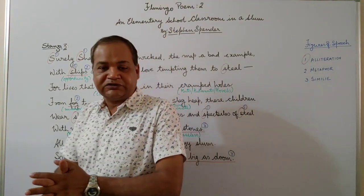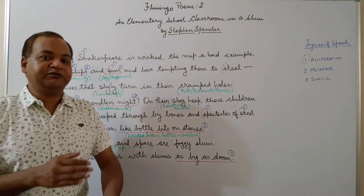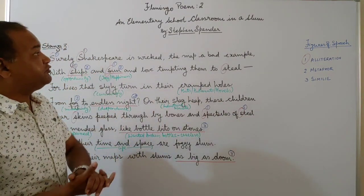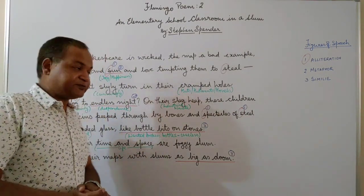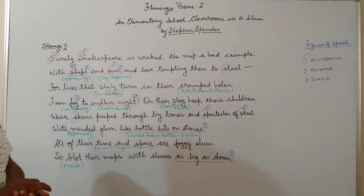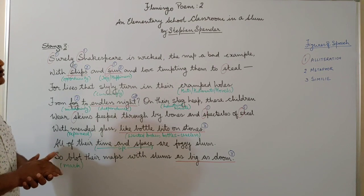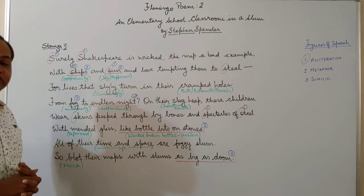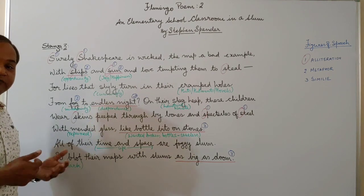Hello everyone, once again we meet. Today we'll be taking up the third stanza of the poem 'An Elementary School Classroom in a Slum' by Stephen Spender. Let's give the stanza a quick read. In this stanza, the poet has started to talk about his own frustration and the living conditions of the children in the slum in particular.